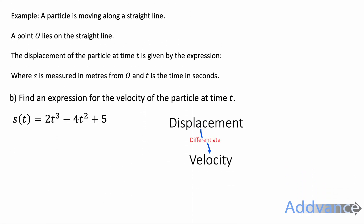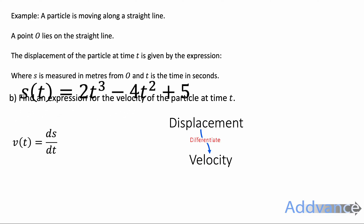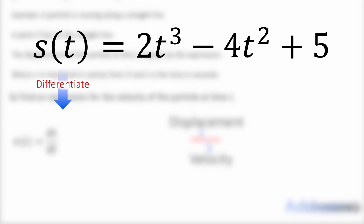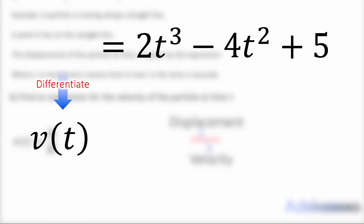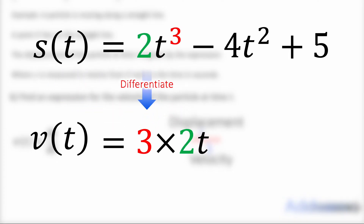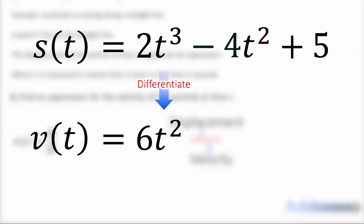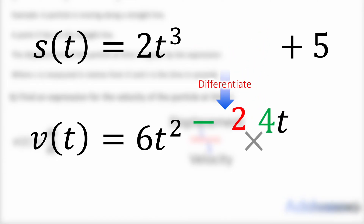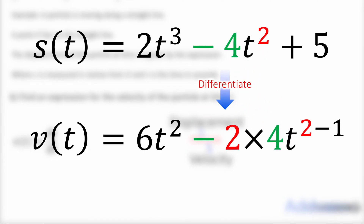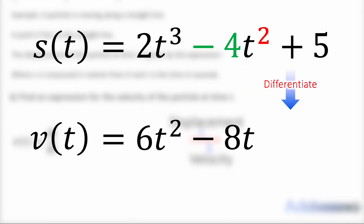Part B: find an expression for the velocity of the particle at time t. To find velocity we differentiate the displacement. s(t) = 2t³ − 4t² + 5 differentiates to give v(t). Differentiating 2t³ gives 6t², and −4t² differentiates to −8t. The constant +5 differentiates to 0, so v(t) = 6t² − 8t.